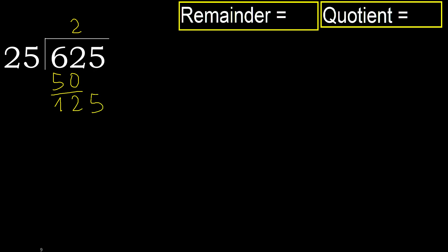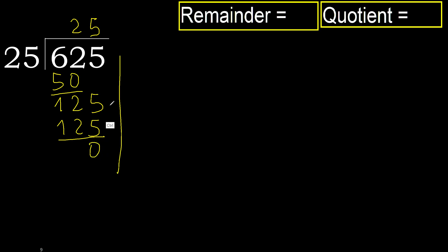125. 25 multiplied by 6 is greater. Multiply by 5: 125 is not greater, ok. Subtract. Next — there is no remainder, therefore finish.